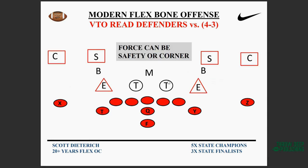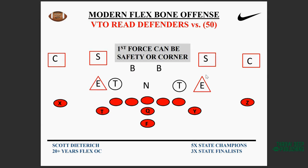Against the 5-1 Bear, we're combo-blocking the three-technique to the single backer, reading the dive key and pitch. Against the 4-3, we're combo-blocking the first down lineman, usually to the Mike. We have ways to account for a hip stunt by the backer, and the force defender could be a safety or corner depending on whether they're playing sky or cloud — we wall the backer until we can't and then can get to an arc scheme. Against the 50 defense, our reads differ from a true inside veer team: we combo the four-technique to the backer and read the end, which is often a give, but if it gets to pitch it's a safety or corner decision.